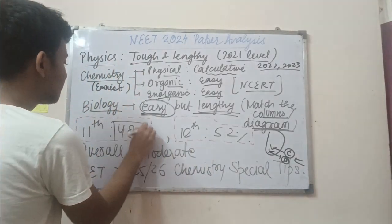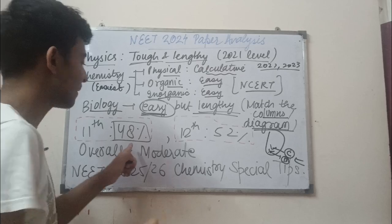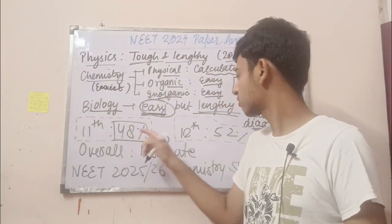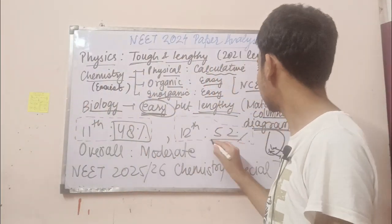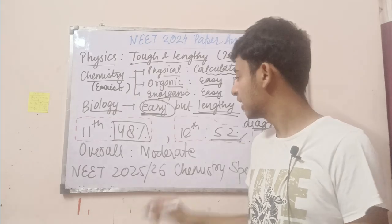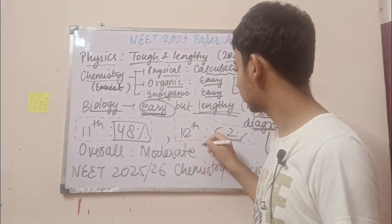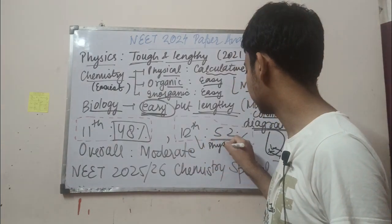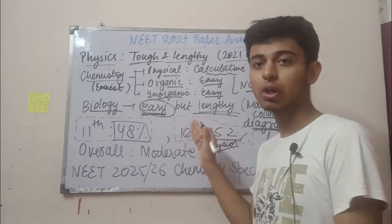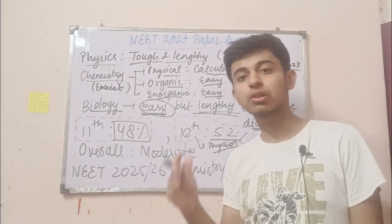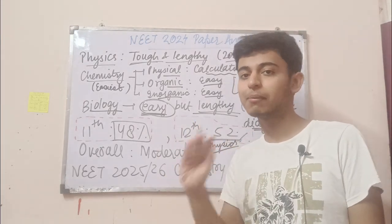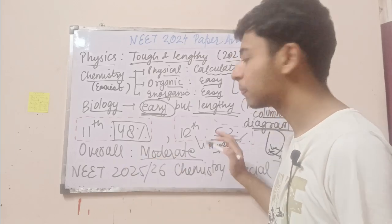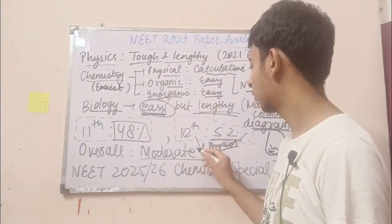Regarding class distribution: 48% of the paper was from class 11th and 52% was from class 12th. Class 12th was especially highly dominated in the physics section. In the biology section it was almost equal, and in the chemistry section also almost equal. Overall it was a moderate paper, like every year.